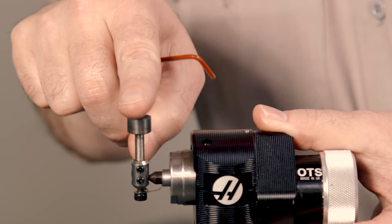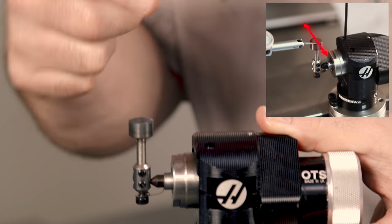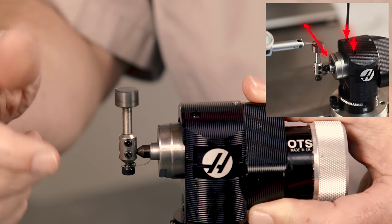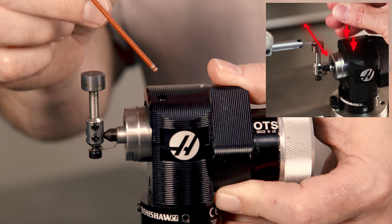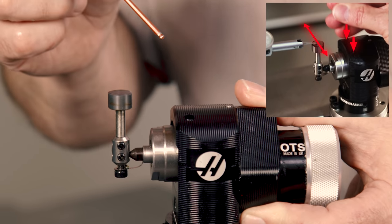With your indicator going front to back, checking for level, we can adjust the rotation front to back in the Y axis with these two screws, these two, two and a half millimeter Allen wrench screws.